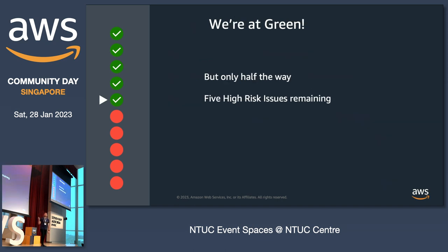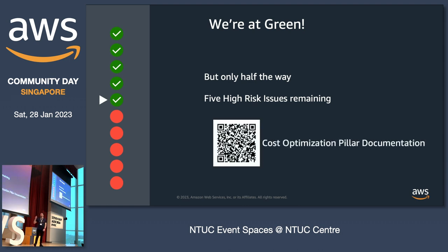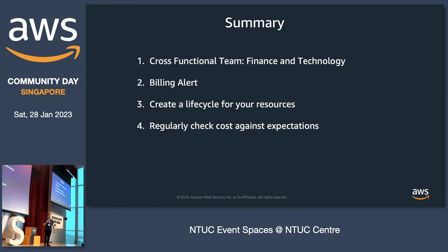We are only halfway — there are still five risk issues remaining, but we don't have time today. I highly encourage you to visit the cost optimization pillar documentation to get more insights about every single best practice and question we discussed. Here are the key takeaways you should consider: starting from creating a cross-functional team that has people from finance and technology — this team would be the foundation to eventually become a cost-efficient organization.